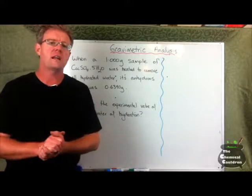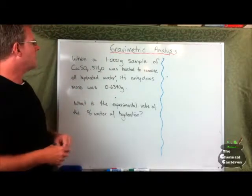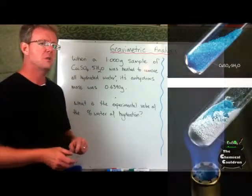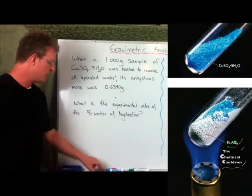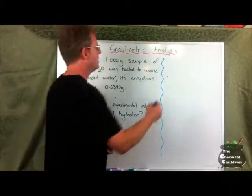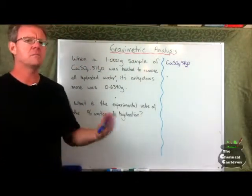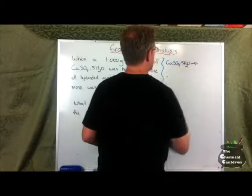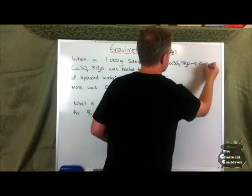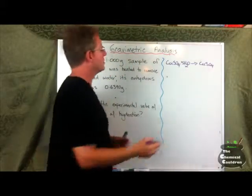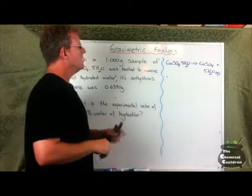Okay. Here we are looking at a gravimetric analysis question. Let's go through it. It says, when a one gram sample of a copper sulfate pentahydrate compound was heated to remove all hydrated water, its anhydrous mass was 0.6390 grams. What is the experimental value of the percent water of hydration? So the first thing we do in chemistry is we like to do an equation. So we have copper sulfate pentahydrate. Of course, here we're just adding heat, so we're decomposing. It's a decomposition reaction. That gives us copper sulfate. And then, of course, we have our five water molecules being released as a gas. So we've got that happening.